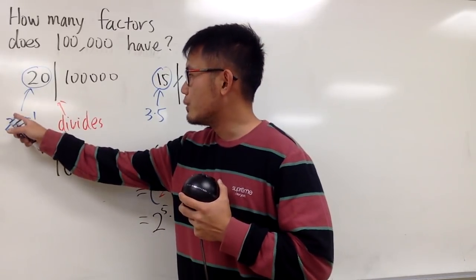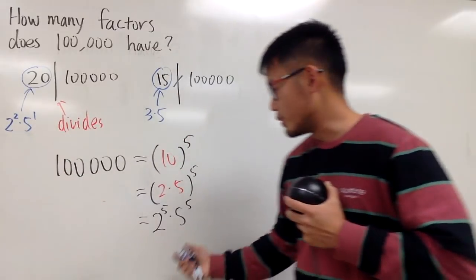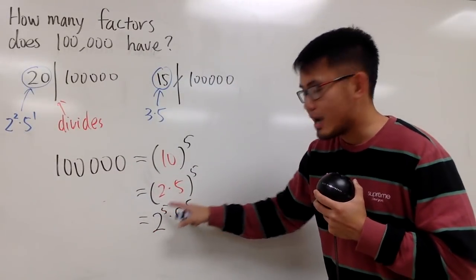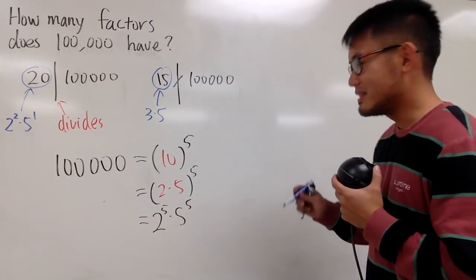And you notice, 2 to the second times 5 to the first. This right here does go into that, because of the power. 2 and 1 are smaller than 5 and 5. And that's the idea. So, here is the deal.